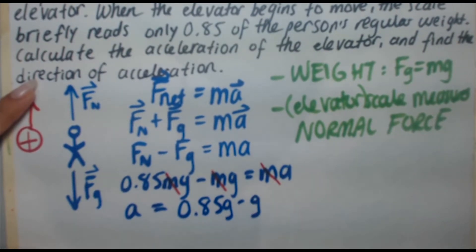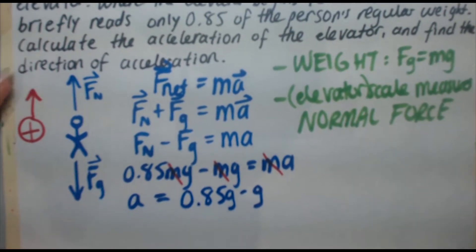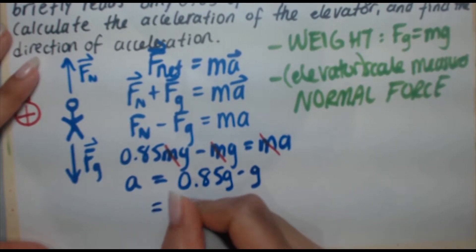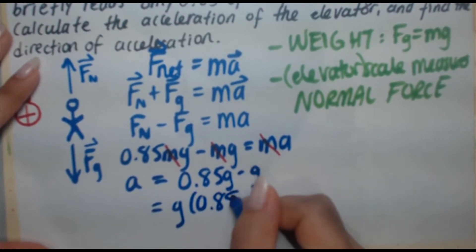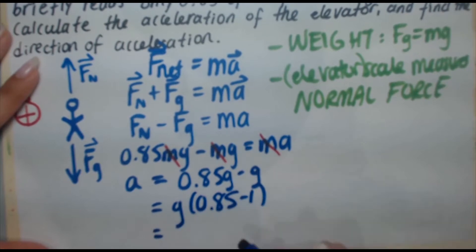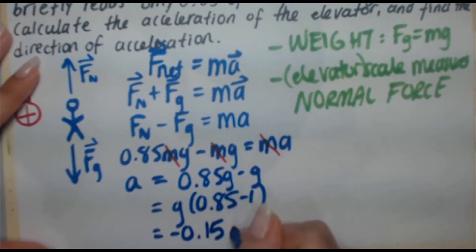Okay. 0.85g minus g. So, what we can do is factor out the g. So, you get g times 0.85 minus 1, which is, well actually, that should be a minus now, minus 0.15g, or a equals minus 0.15g.